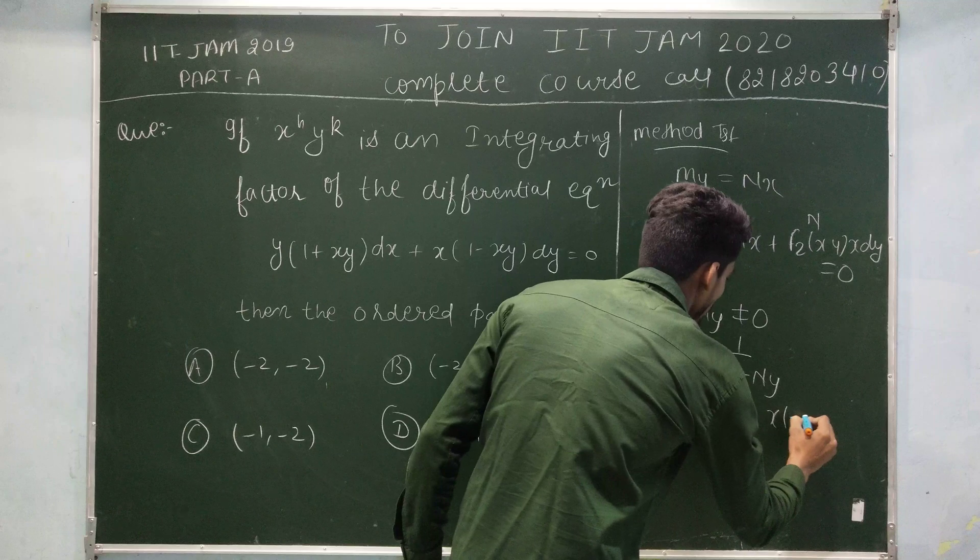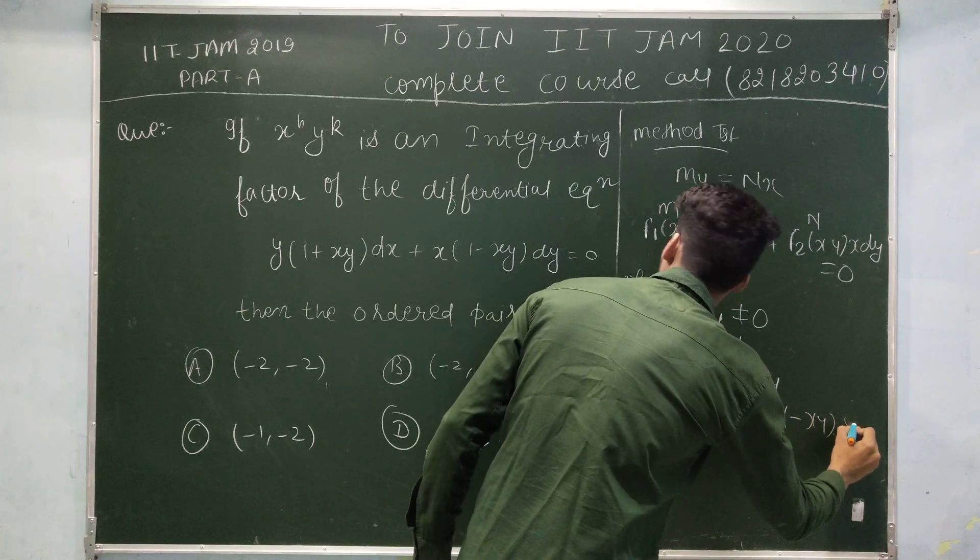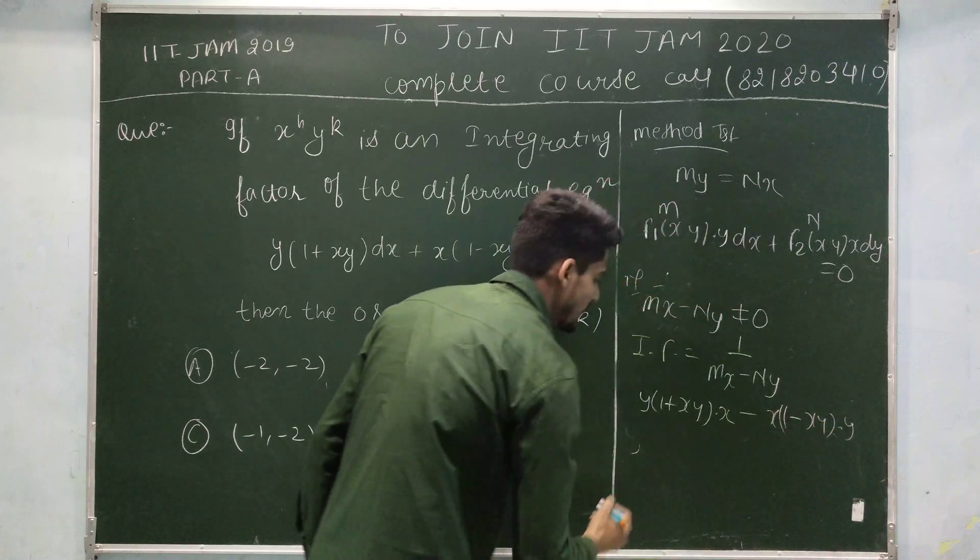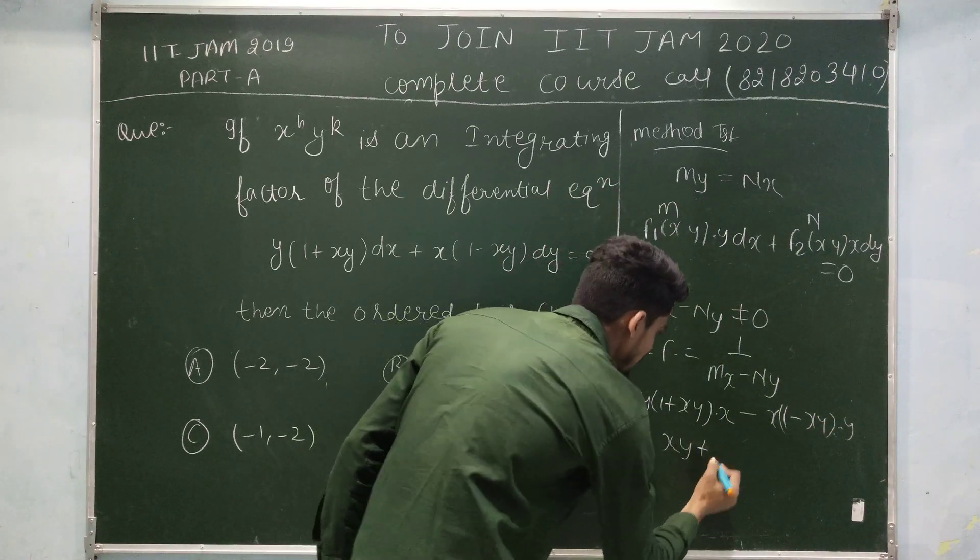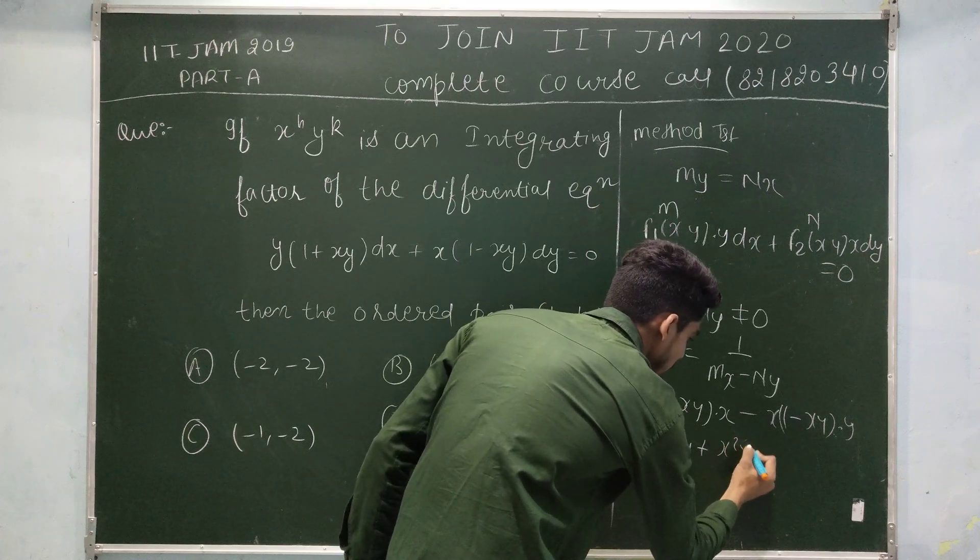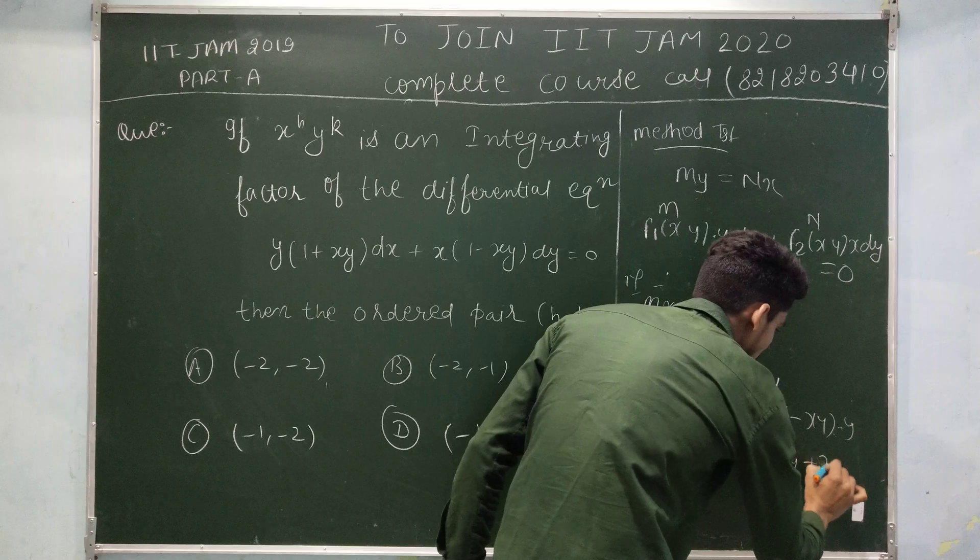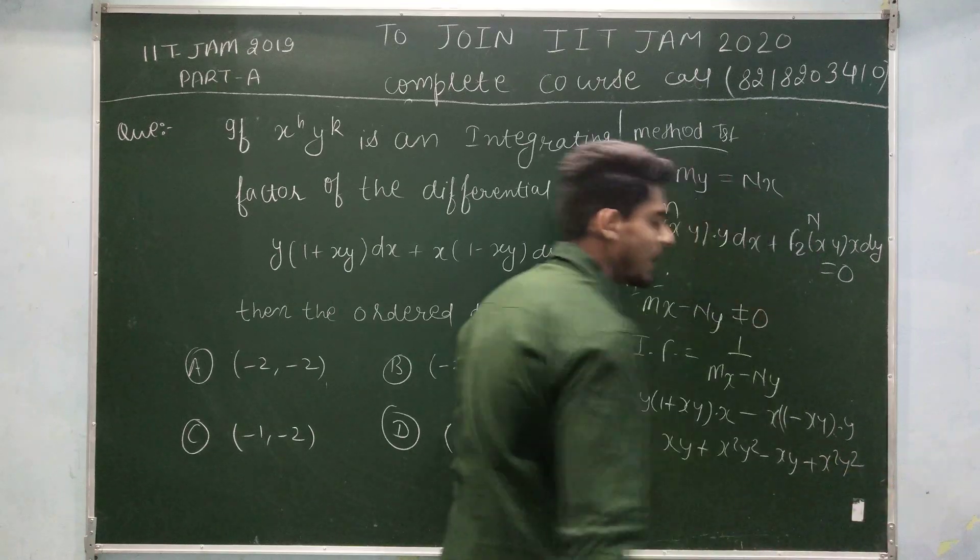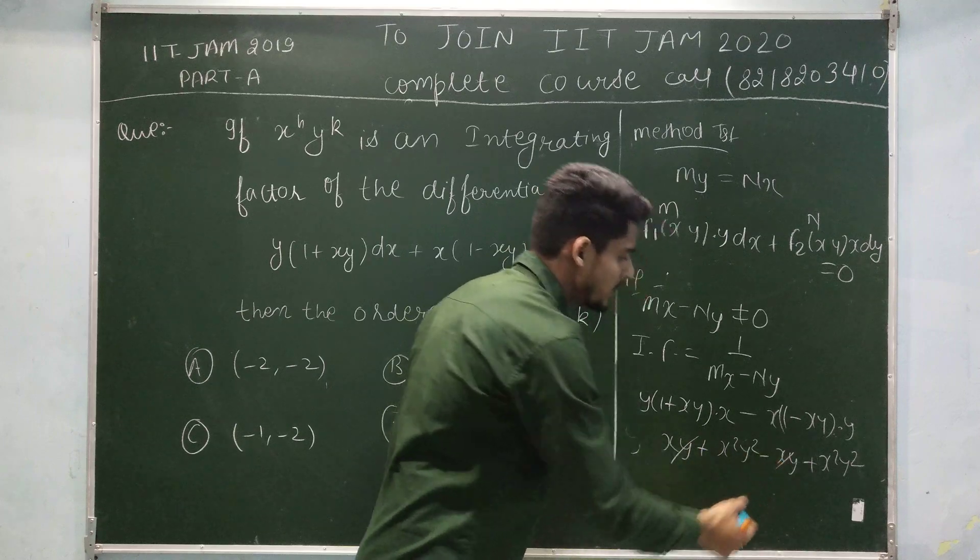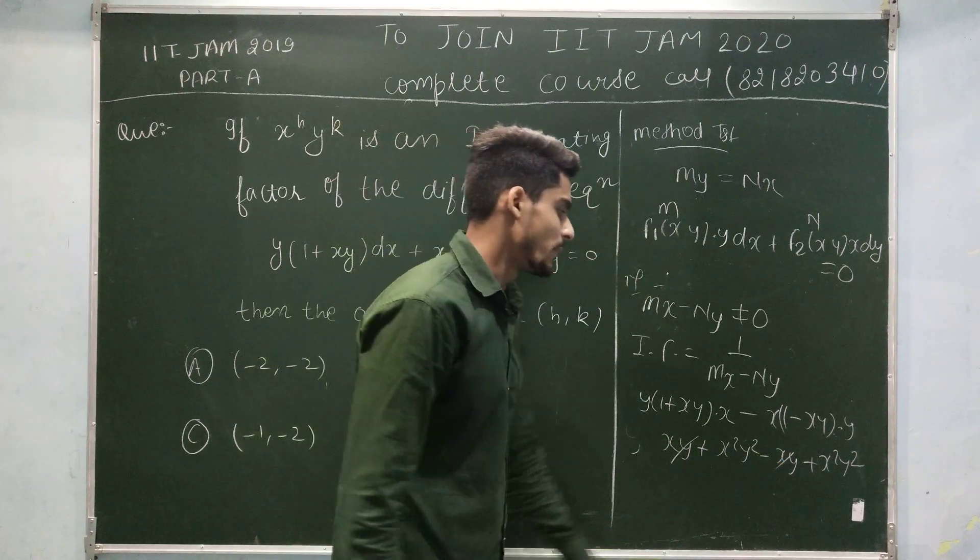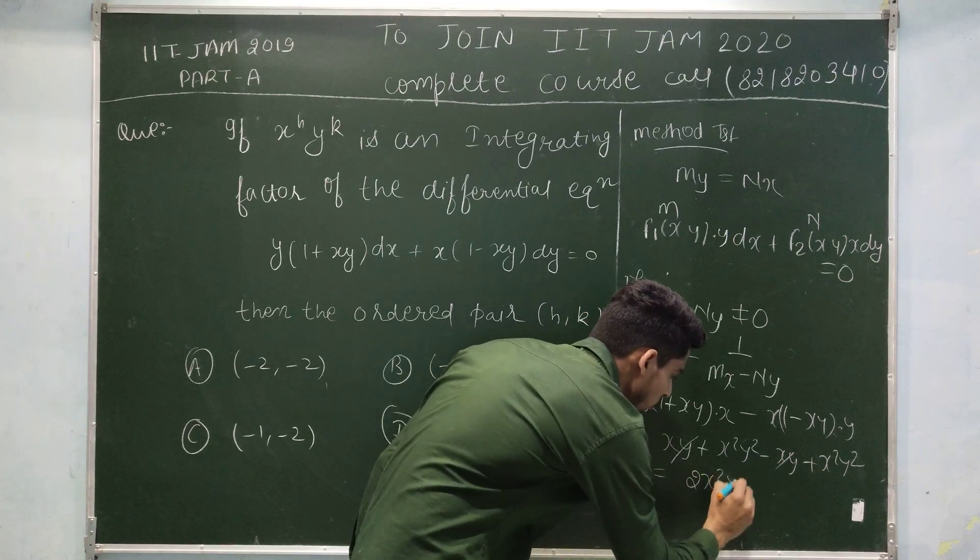n is x into (1 minus xy) into y. And this is exactly equal to xy plus x square y square minus xy plus x square y square. And xy minus xy will get cancelled out. Then x square y square plus x square y square is equal to 2 times x square y square.